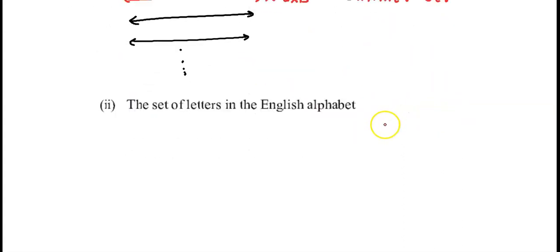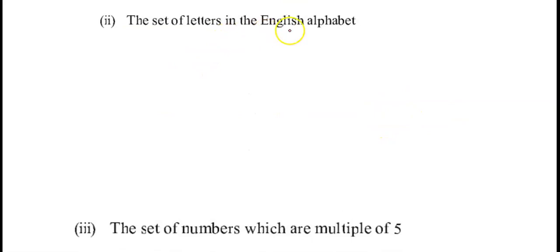The set of letters in English alphabet: a, b, c, d and so on up to z. We know that there are 26 of them, so the count is fixed. This is a finite set.